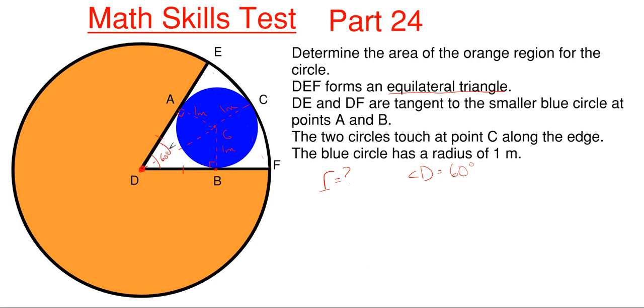What that means is this angle right here is going to be split in half at 30 degrees and 30 degrees due to AD being equal to DB, and then AG being equal to GB here.